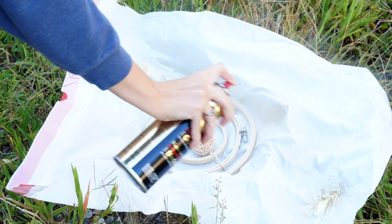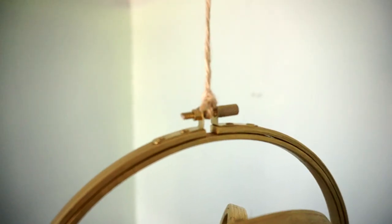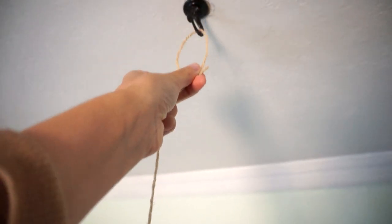To finish it off, I brought my time turner outside and gave it a few coats of gold spray paint. Once it's dry, tie it to a long piece of twine and attach it to your ceiling.